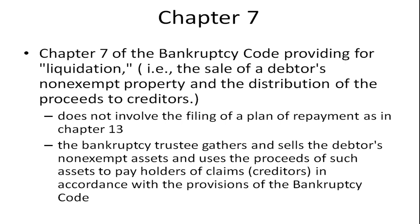Chapter 7 of the bankruptcy code is a liquidation. That means it's the sale of the debtor's non-exempt property and the distribution of the proceeds to creditors. There may be some exempt property depending on the state — some states may exempt an individual's home from the bankruptcy proceeding, so they may be able to keep their home. But whatever is non-exempt gets distributed to creditors. This does not involve the filing of a plan of repayment as in Chapter 13. There's a plan to liquidate everything non-exempt and pay the creditors in some sort of order, with some creditors ahead of others depending on state or bankruptcy rules.